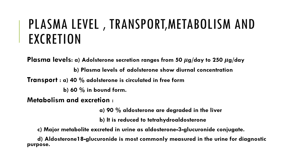Regarding plasma level, transport, metabolism, and excretion: aldosterone secretion ranges from 50 to 250 micrograms per day, depending on sodium intake and diurnal variation. For transport, 40 percent of aldosterone is in free form and 60 percent in bound form. Aldosterone is weakly bound to aldosterone-binding globulin, transcortin, and albumin, and due to this weaker binding compared to cortisol, its plasma half-life is only about 20 minutes.